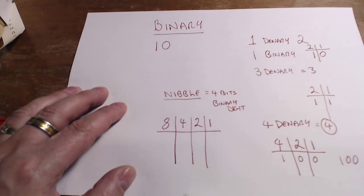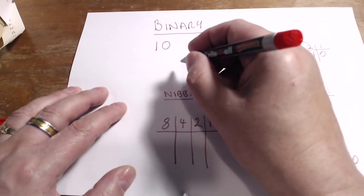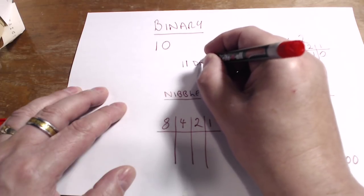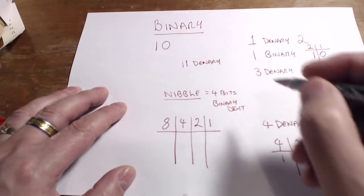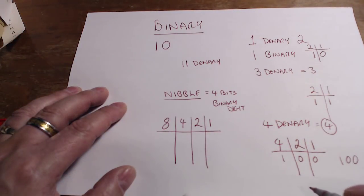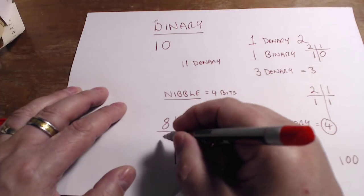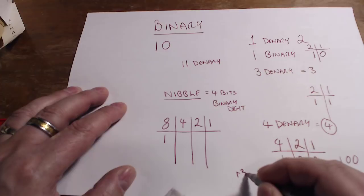Put my columns down. So let's have a think. I want to write the number eleven denary—not binary—the number eleven, so ten plus one, eleven denary in binary. Does eight go into eleven? Eight goes into eleven once, and we have a remainder of three.